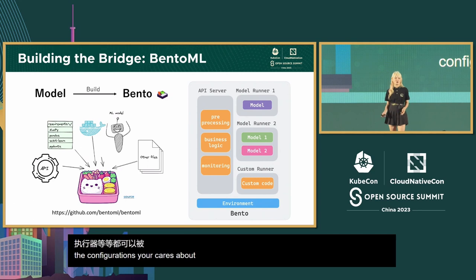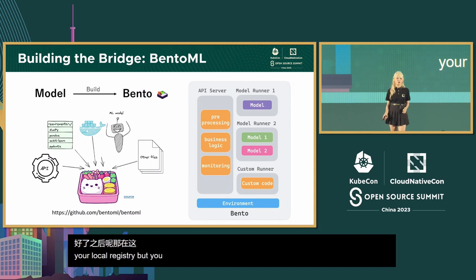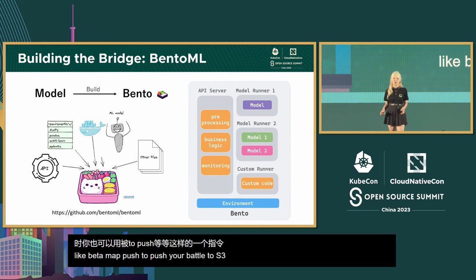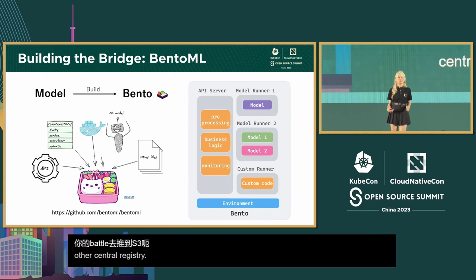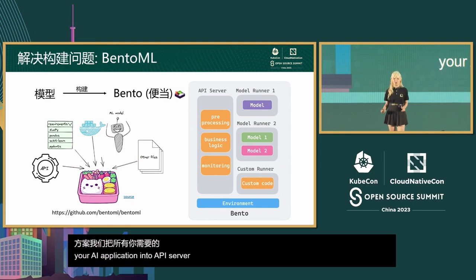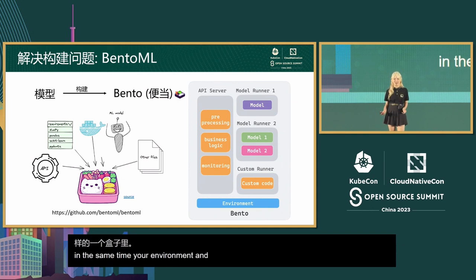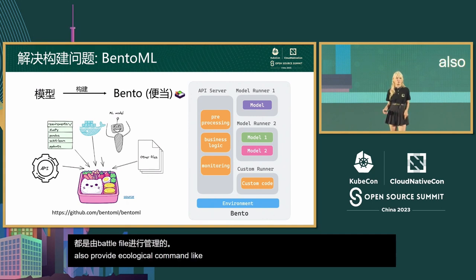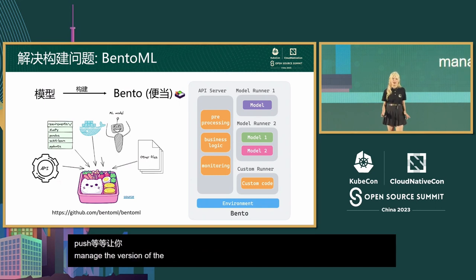Once a Bento is built, it's stored by default in your local registry. But you can also use a command like `bento push` to push your Bento to S3 or other container registries. We divide everything you need for your AI application into API server and model runner. Your environment and configurations are managed by the Bento file, and CLI commands like `bento build` and `bento push` help you easily build and version your Bentos and models.